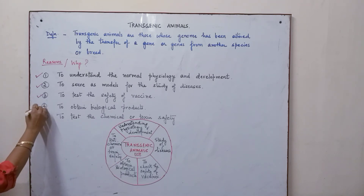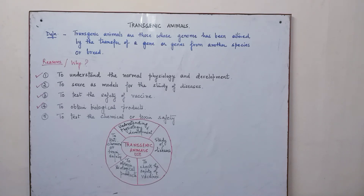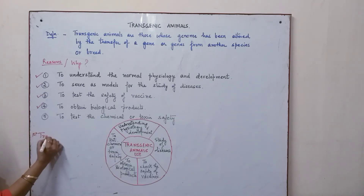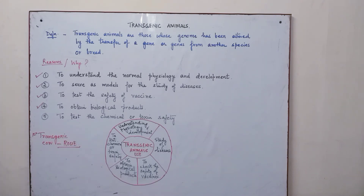The fourth use is to obtain biological products. Various biological products can be obtained using transgenic animals by introducing the gene for a particular molecule into the animal. The first transgenic cow, named Rosie, was produced in 1997.